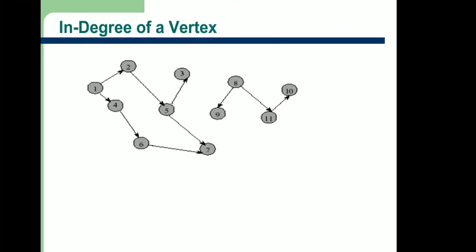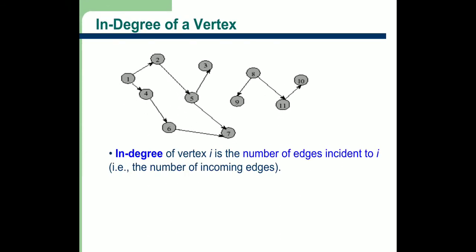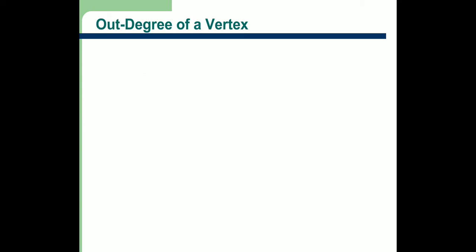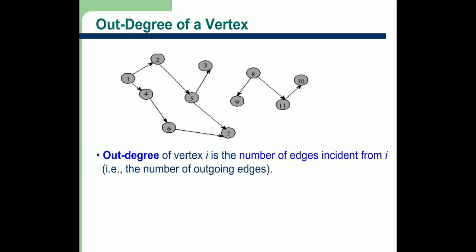Out-degree is how many outgoing edges a particular vertex has. For example, node 2 has one outgoing edge (2→5), so the out-degree of 2 is 1. Node 8 has two outgoing edges — (8→9) and (8→11) — so the out-degree of 8 is 2. The total degree is always the sum of in-degree and out-degree.